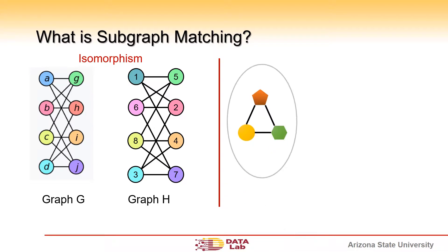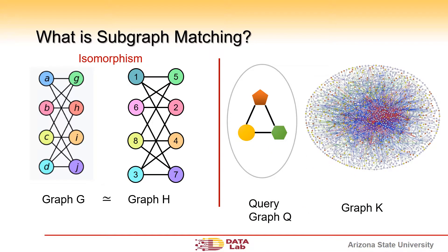In subgraph matching, there is query Q and data graph K. If a subgraph in K is isomorphic to query Q, that makes an exact matching. Otherwise...